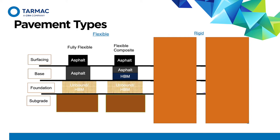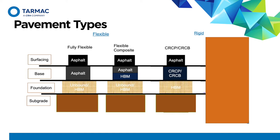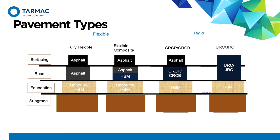The second main type is the rigid, which derives its properties from concrete. The first type is the continuously reinforced concrete pavement or continuously reinforced concrete base. Here the base would be of this concrete type. The foundation would be hydraulic bound material, while the surfacing is asphalt to provide riding quality. The final type is the URC — unreinforced jointed concrete — or JRC, jointed reinforced concrete. Here the concrete actually extends from the base to the surfacing, i.e., the concrete surfacing is suitable for riding quality. So these are the four main types in the pavement industry.